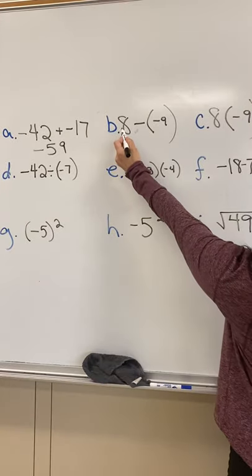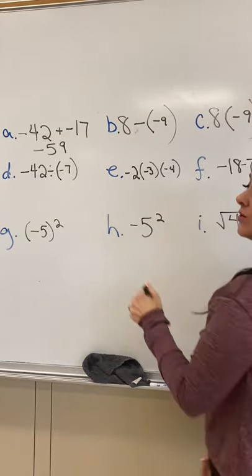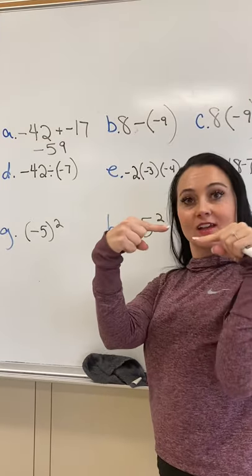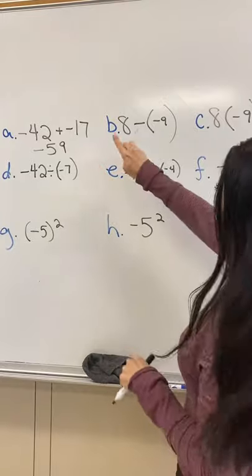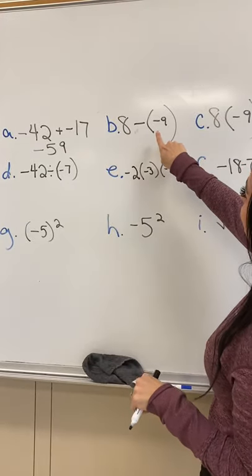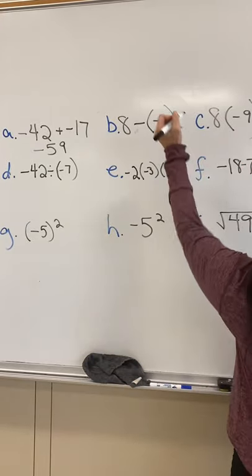B: 8 minus negative 9. When you have a minus and a negative next to each other, you can basically just make them go away and make them a plus, so it's like saying 8 plus 9. So that is 17.